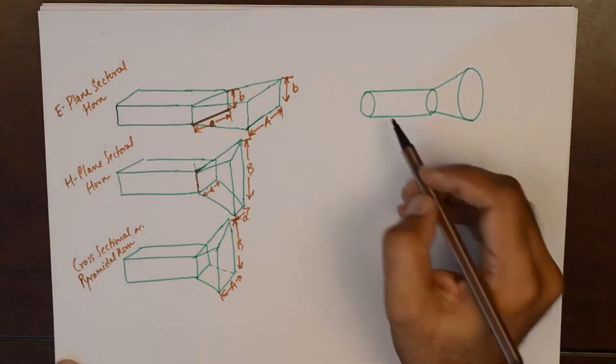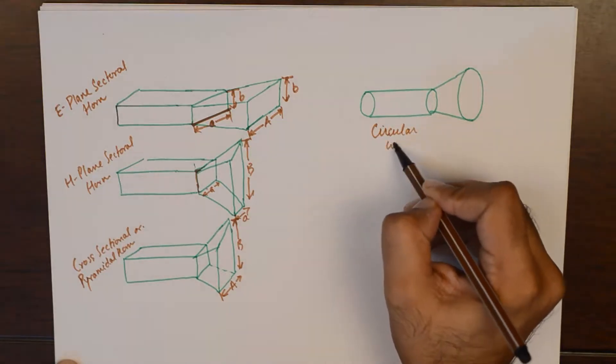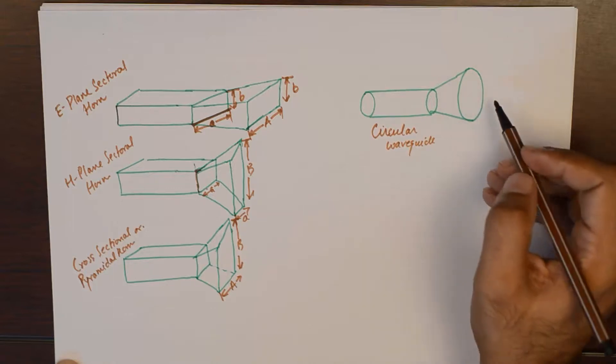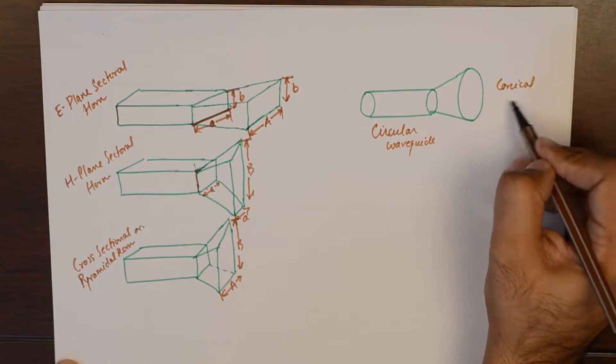And, this is an example of circular waveguide being flared and it results in conical horn.